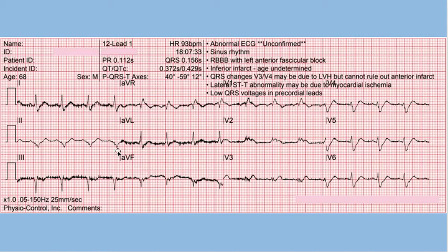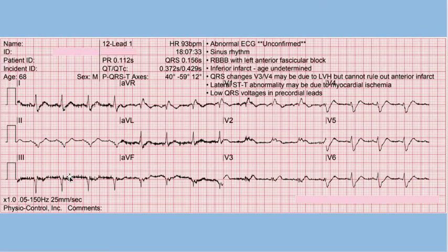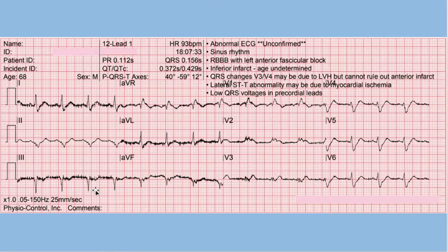Moving over to the frontal plane, here is that lethal combination: a leftward axis. The computer is measuring it at negative 60 degrees, so this is a left anterior fascicular block. Even though there's a lot of artifactual fuzz with this bandwidth of 0.05 to 150 hertz, you can still see J point depression appreciable in AVF and lead III, with some beat-to-beat variability, but nonetheless ST segment depression. All of this in combination is indicative of a proximal LAD occlusion.